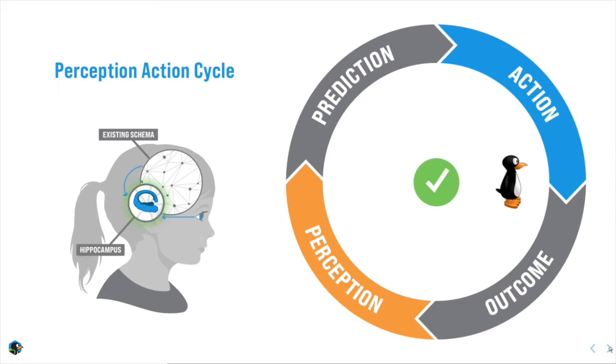The prediction I made is compared to my perception. Here's what I thought would happen, versus here's what actually happened. And because I was correct, they match. And the schema that caused me to make that prediction is strengthened.